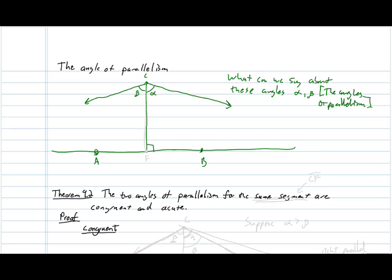Looking ahead, Theorem 9.2 says something very strong about these two angles: they're going to be congruent to one another and they're going to be acute. The angle of parallelism appears to be dependent upon the segment discussed — specifically segment CF. What we'll find later is that the length of this segment, the distance that C is from line AB, can actually change the value of these angles of parallelism. But Theorem 9.2 says that as long as we're considering the same segment, the left and right angles are going to be congruent and acute.